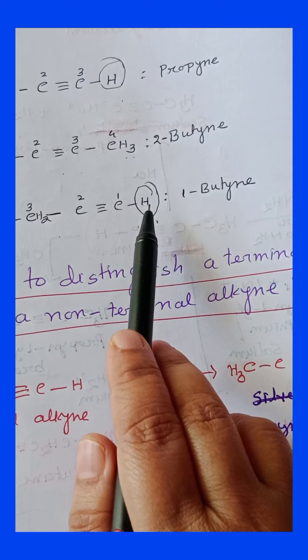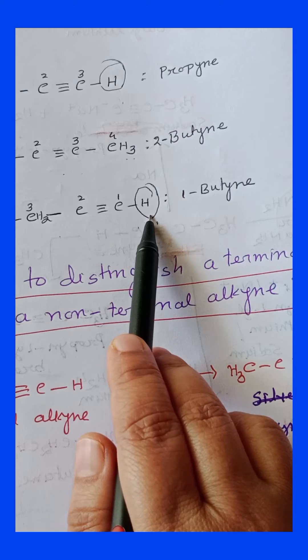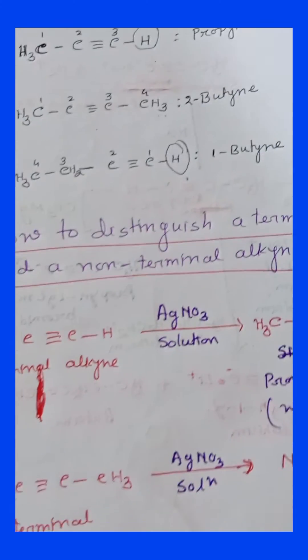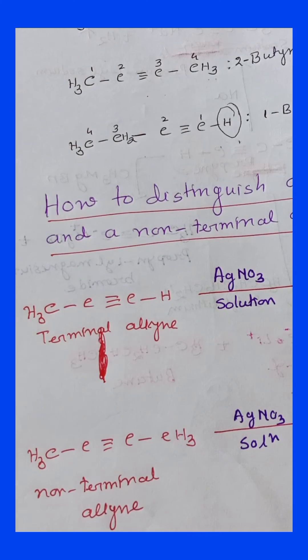Now terminal alkyne, the hydrogen is acidic in nature. Using this property, we can distinguish between terminal and non-terminal alkyne.